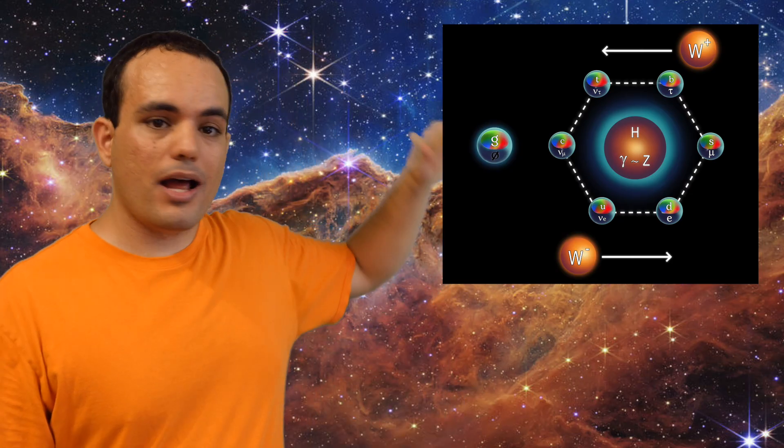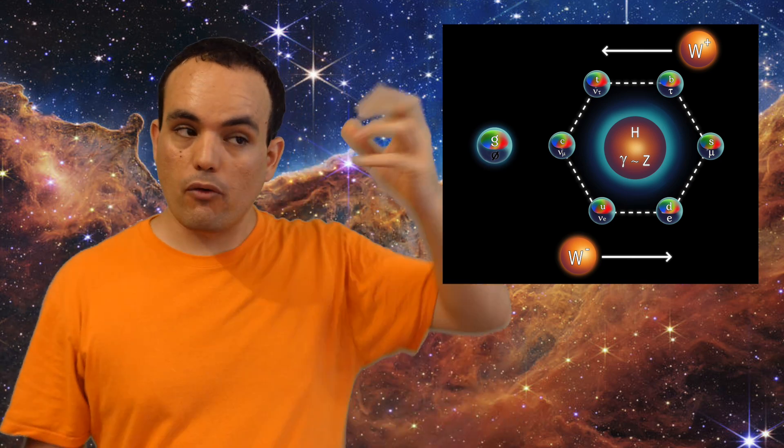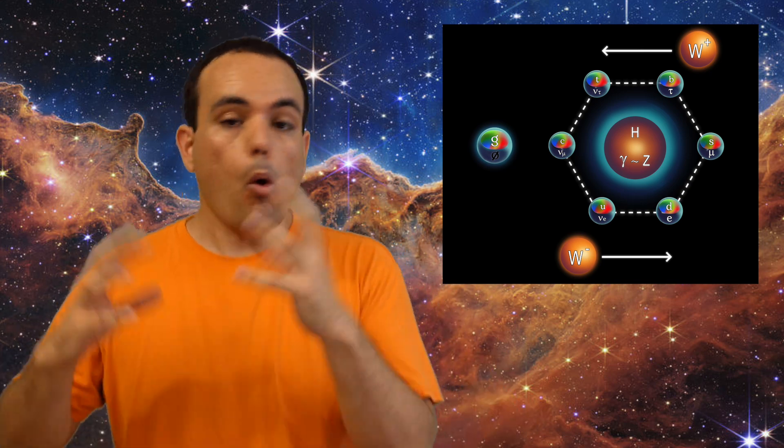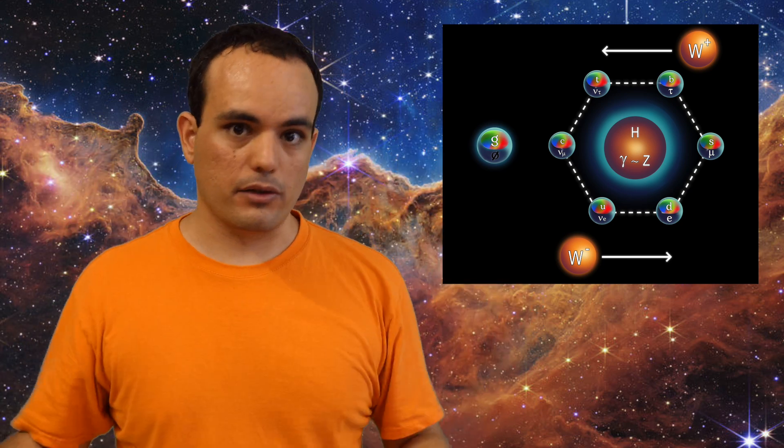The particles in the second and third generation are all unstable. And after extremely short periods of time, they all break apart into particles of the lower generations. But we have been able to observe them in certain kinds of radiation, or we can force them into existence by smashing particles at extremely high energies. But we have never found evidence for any other generations of particles.